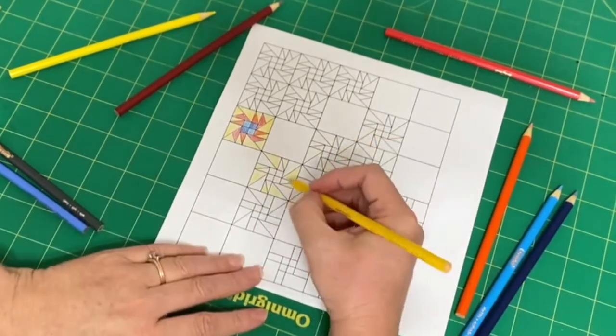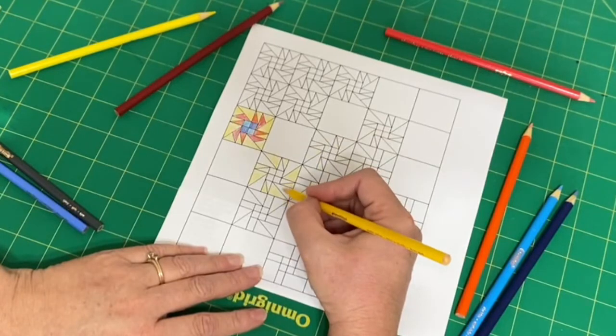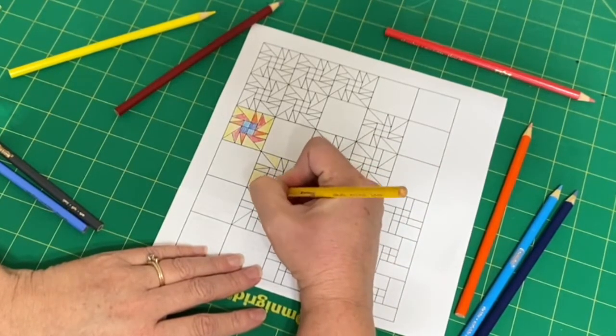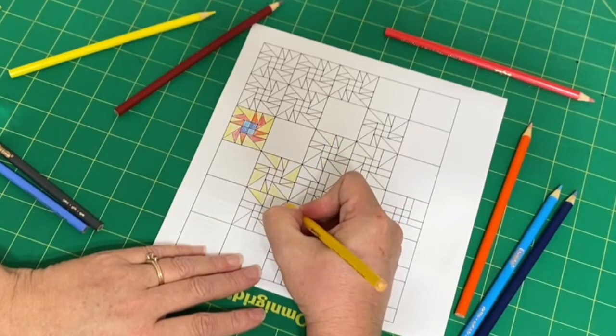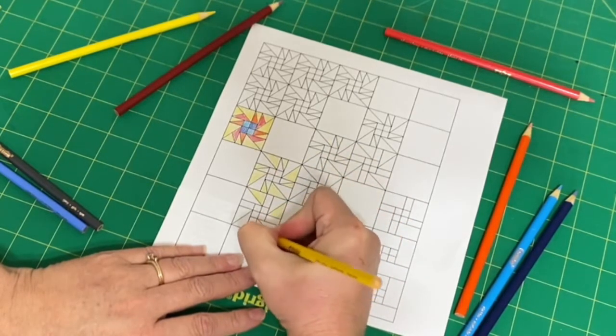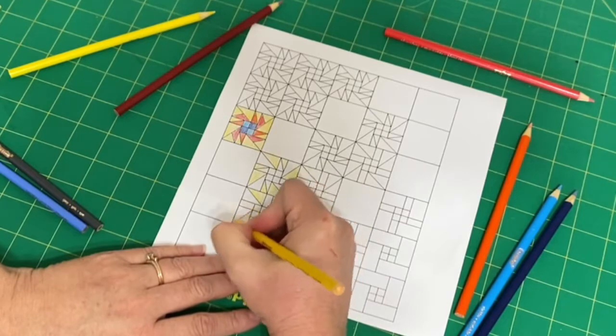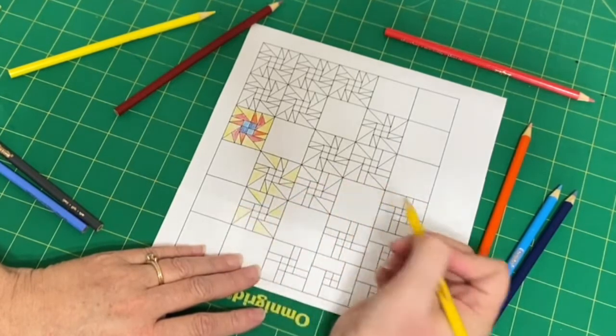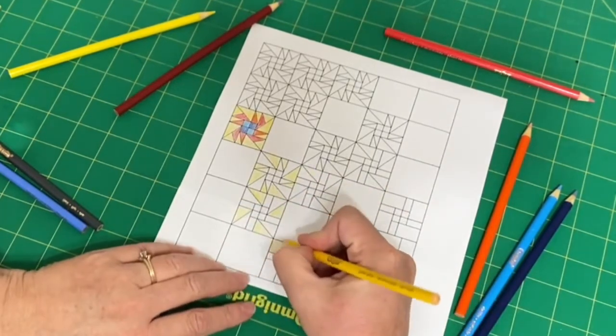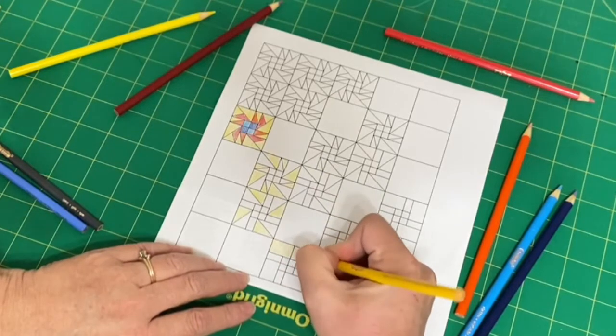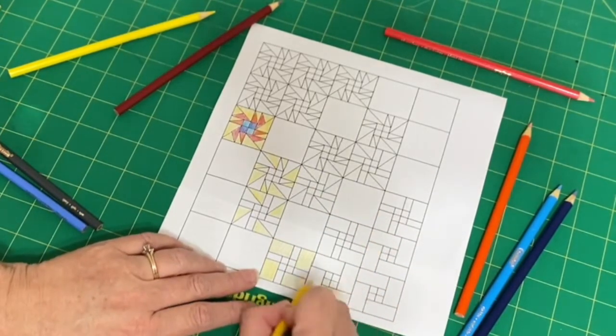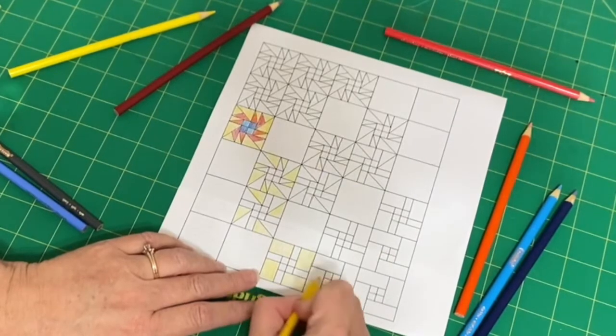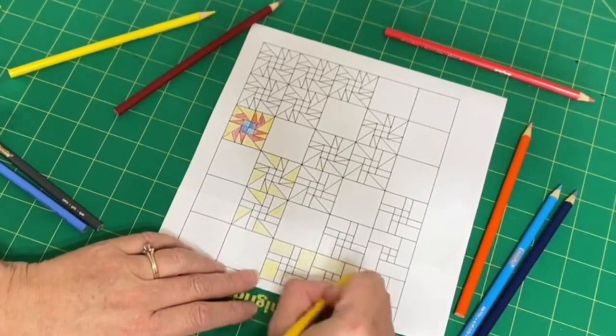And then in this block, we are keeping our pinwheel going this direction. So this would be background. And then these rectangles are background. And the four patch would all be colored in background.